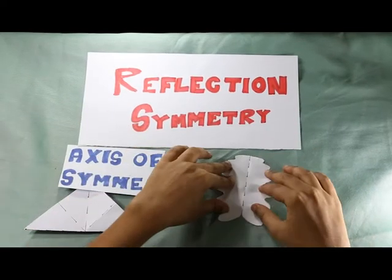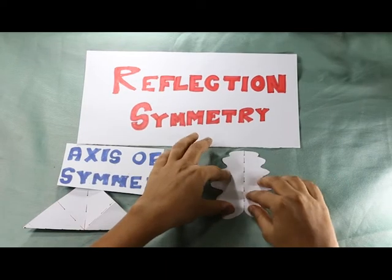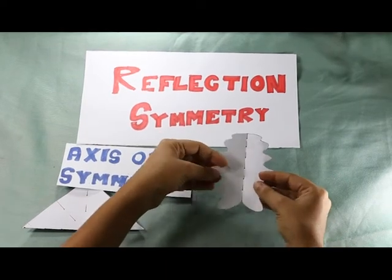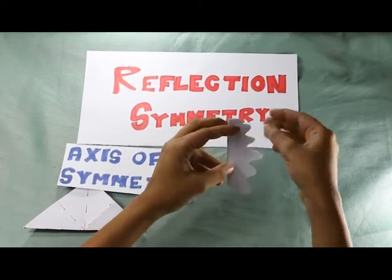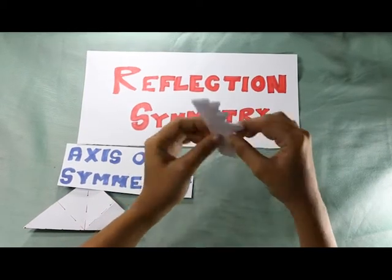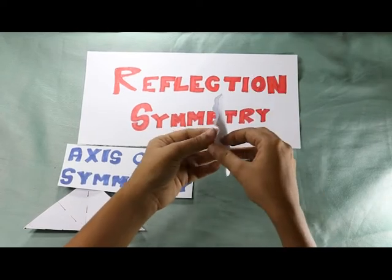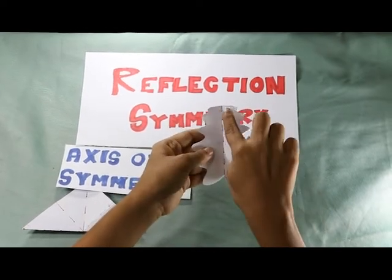Let's start with the second shape and fold the shape along the dotted line. When I do this, both the sides of the shape overlap perfectly. This means that the dotted line is an axis of symmetry and the figure shows vertical reflection symmetry.